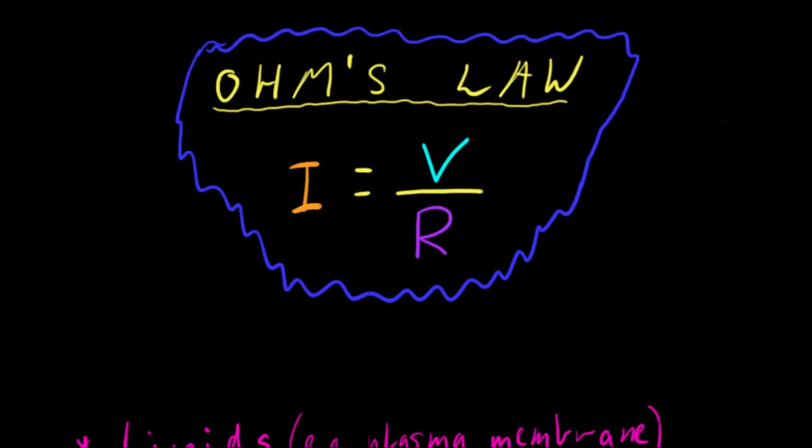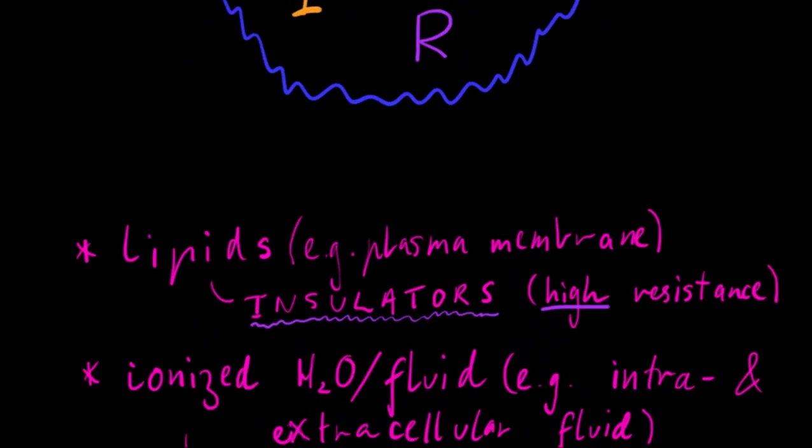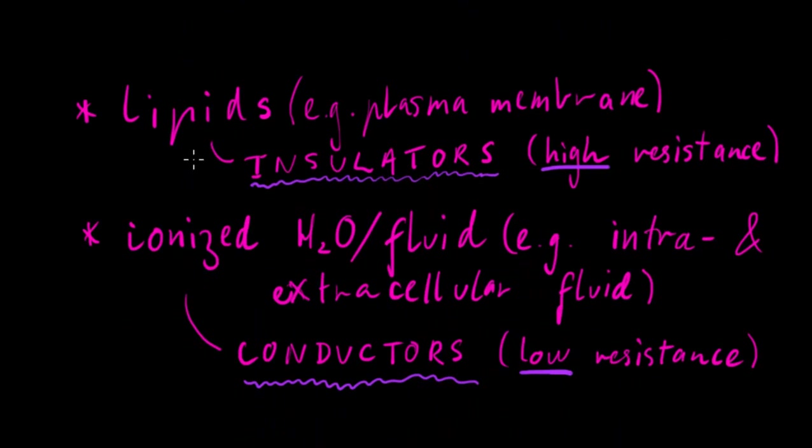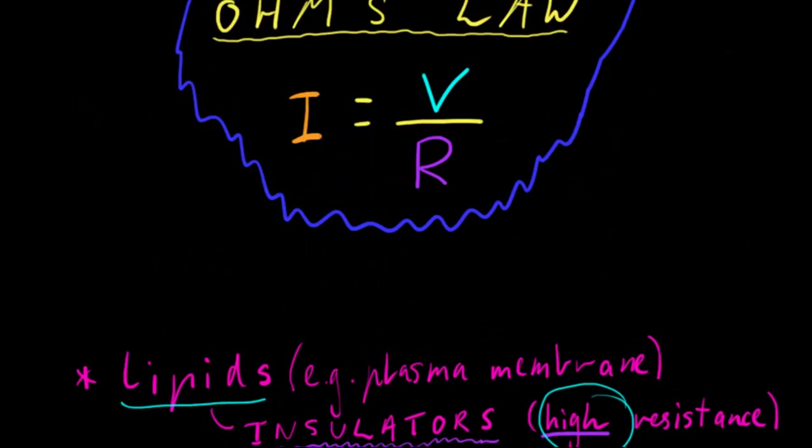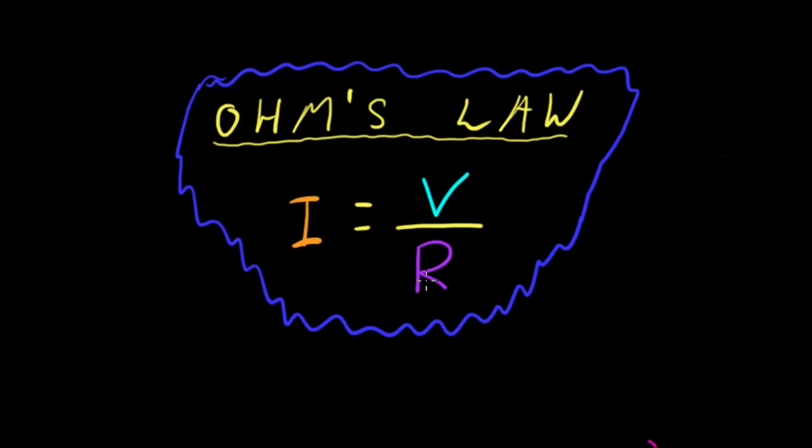So, to apply this, let's look at some examples. For example, lipids. Lipids, such as the plasma membrane, are insulators because they have a high resistance. And if we look at Ohm's Law, a high resistance means that we have less current.